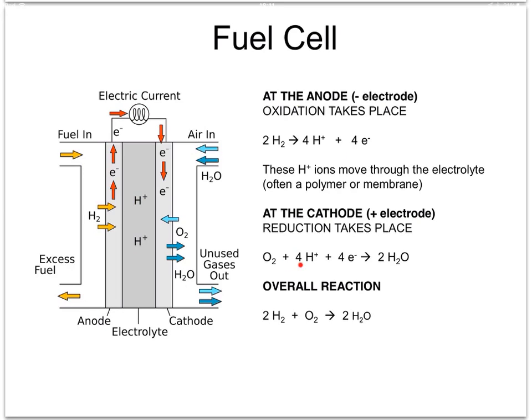If we add the two equations together and cancel out whatever appears on both sides, we end up with an overall reaction: two hydrogen molecules combined with one oxygen molecule to make two water molecules. The fuel cell is therefore very efficient because it doesn't produce any heat, has no moving parts and produces no greenhouse gases.